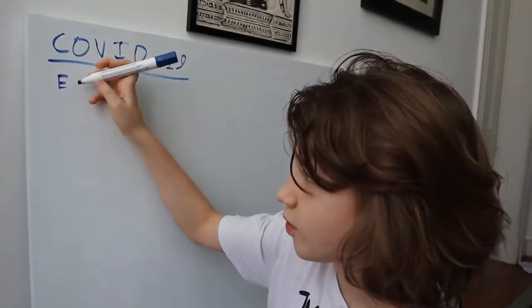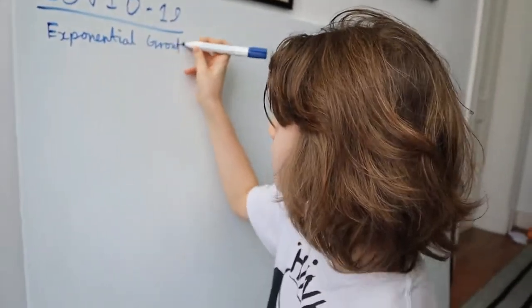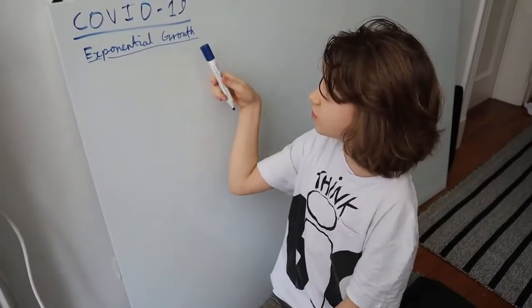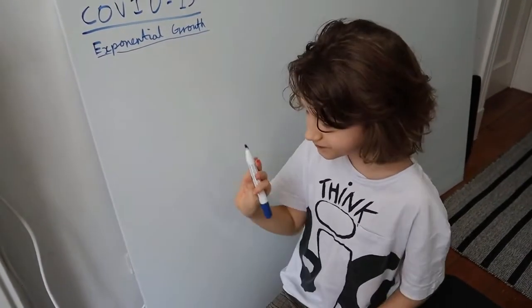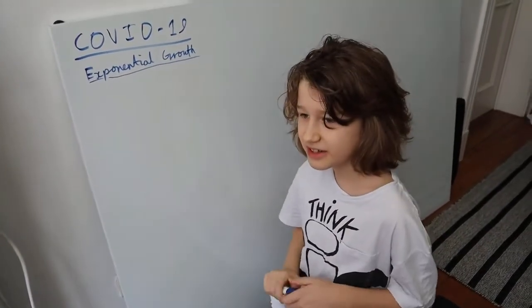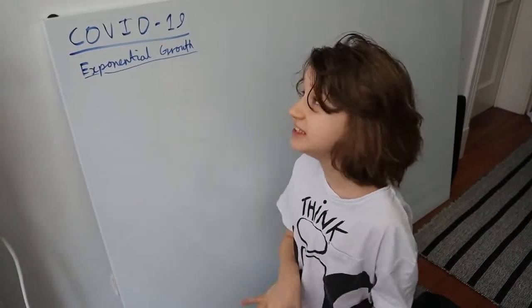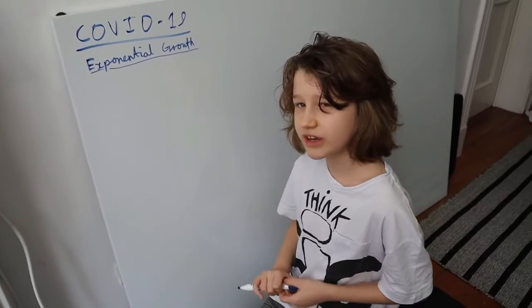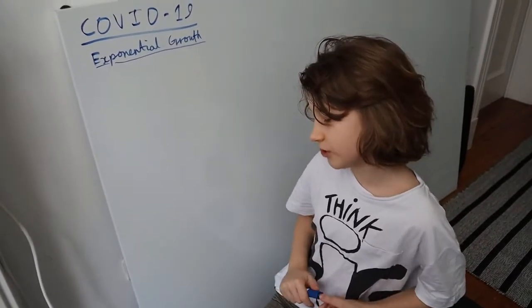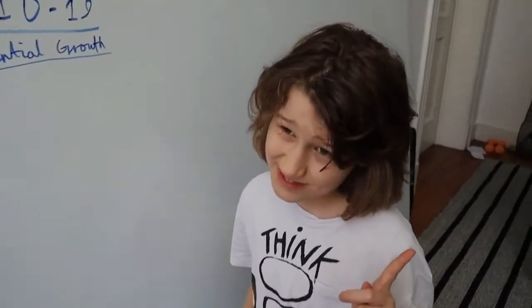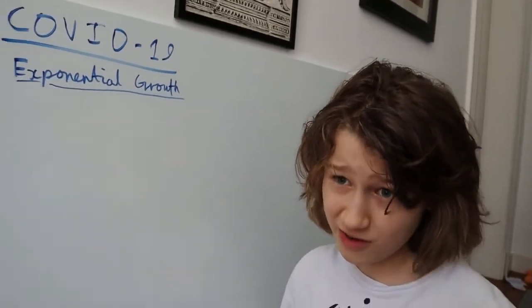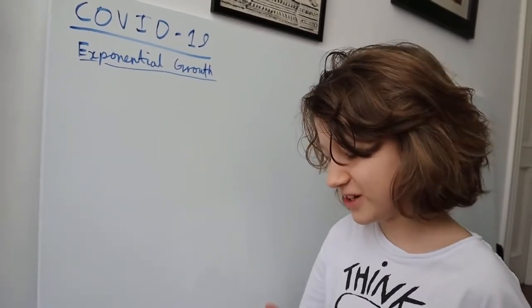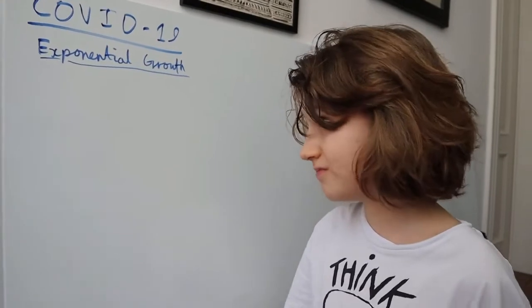We're going to start with exponential growth. Exponential growth means something like e to the x - it's a really fast-growing function. It's not a polynomial. See my holograph video to find out what polynomial means.